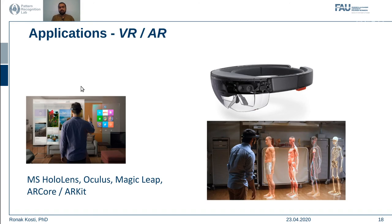As we saw before, in augmented reality and virtual reality, vision techniques are used heavily. As you can see in both examples, the person is wearing the HoloLens and is able to visualize different interfaces or different characters inside the HoloLens as if they are real. This is also another very good example of the use of computer vision techniques as well as graphics.